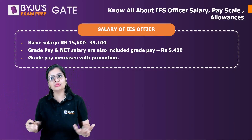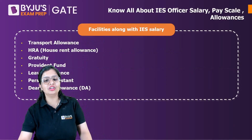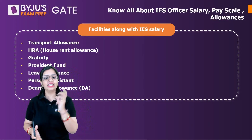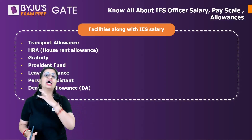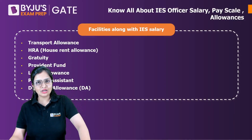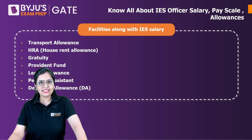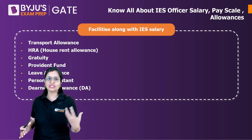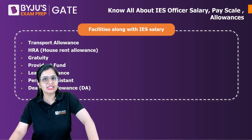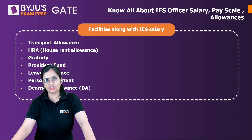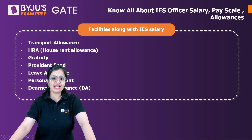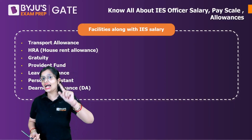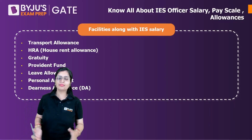Apart from cash in hand, you will also be having transport allowance, HRA (House Rent Allowance), gratuity, provident fund, leave allowance, personal allowance, dearness allowance, and travel allowances like LTC and others. You have such wide facilities. The ₹55,000 figure is as per the revised Seventh Pay Commission. Apart from that, provident fund, HRA, DA — all those things are add-on facilities which you will be getting.